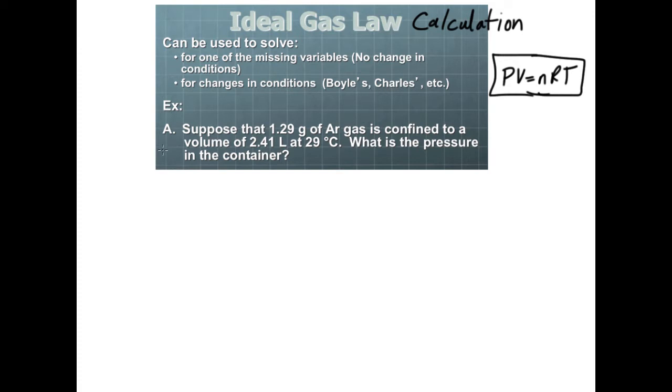Suppose that 1.29 grams of argon gas is confined to a volume of 2.41 liters at 29 degrees Celsius. What is the pressure? First thing, what am I looking for? I'm looking for pressure. I'm given the mass equal to 1.29 grams of argon, volume equal to 2.41 liters, and temperature equal to 29 degrees Celsius.